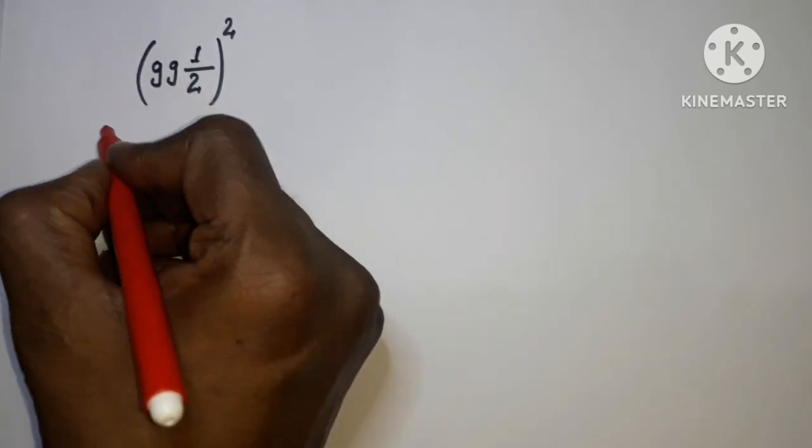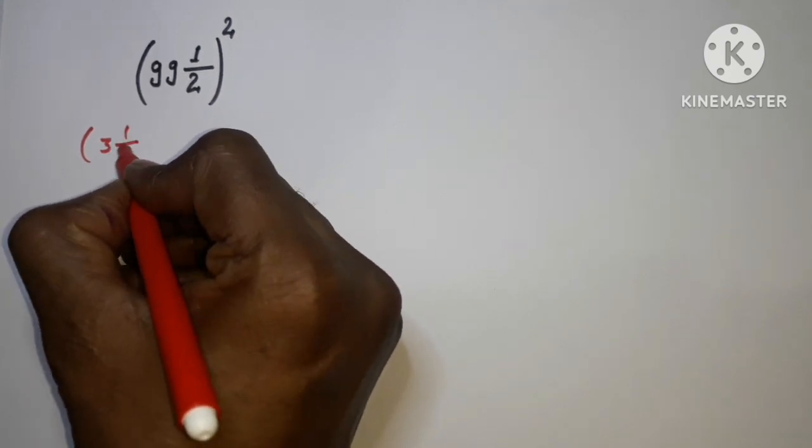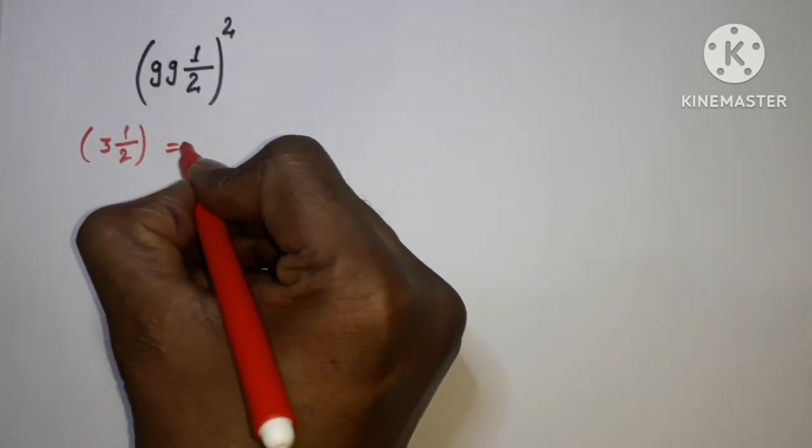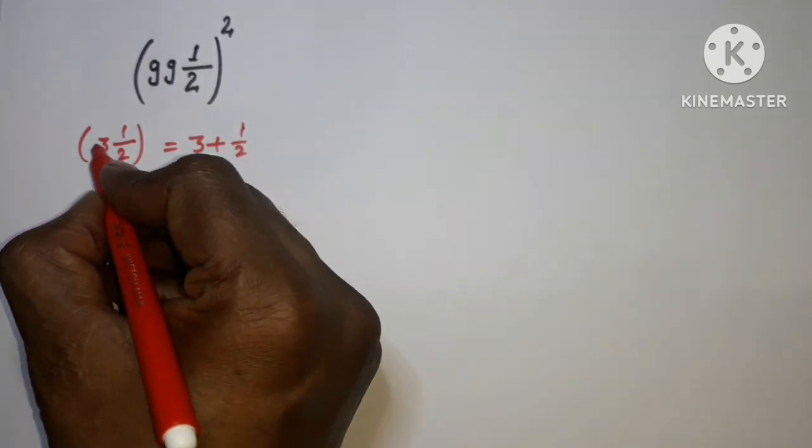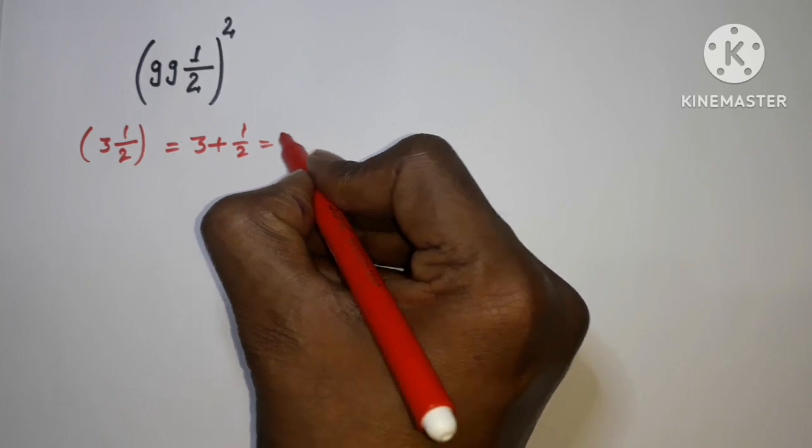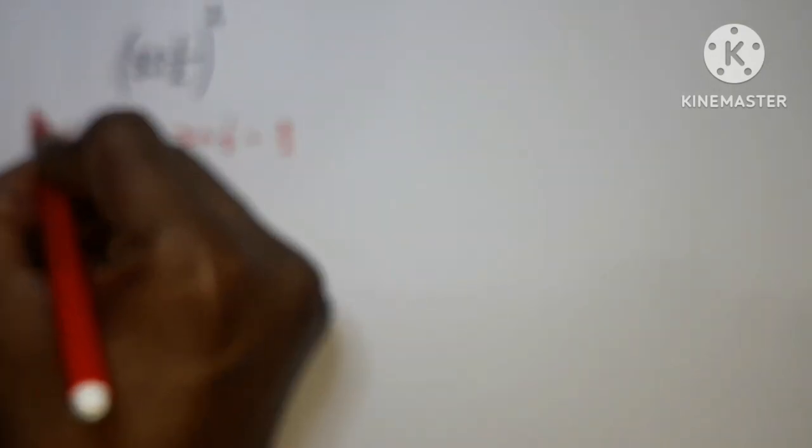Suppose we have 3 and 1/2. This can be written as 3 plus 1/2, which equals 6/2 plus 1/2, which is 7/2. This is just an example to show the method.